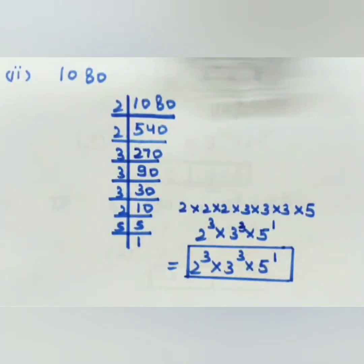This is the second part in which we have to express 1,080 in exponential form. Again we will be finding the prime factorization using the LCM method. This is your practice question — do practice it, and if you have any doubt you can ask.